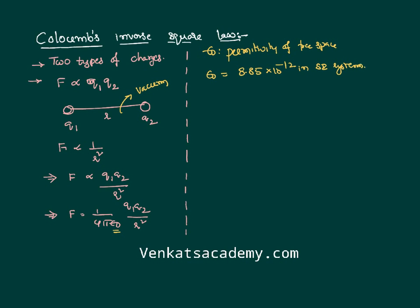And if you write that value 1 by 4 pi epsilon naught, if you substitute that value, 1 by 4 pi is 7 by 22, and epsilon naught is 8.85 into 10 power minus 12. If you calculate this, it comes like 9 into 10 power 9, a constant value. So this is a measure of how effective the medium - vacuum - is influencing the force.